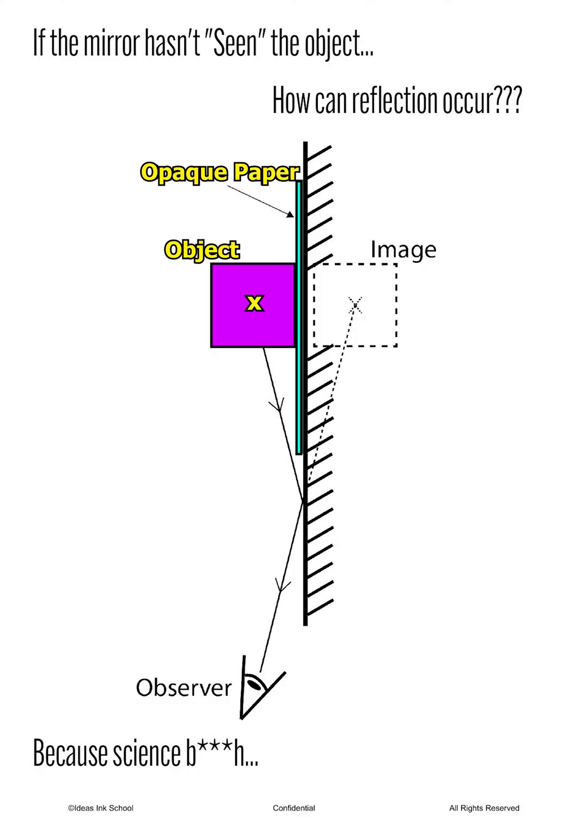We will follow Peck's three-step method when drawing the ray diagram. We begin by first drawing the image on the other side of the mirror. Next, we will draw a line connecting the image to the observer's eye. And lastly, we will connect the light ray originating from the object to the point of incidence. If done correctly, we will notice that light coming from the object can reflect off the mirror at a steep angle and reach the observer's eye, allowing the individual to see the image even though the mirror has not seen it.